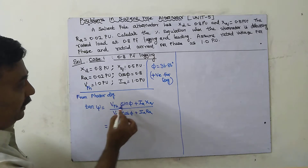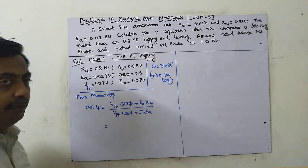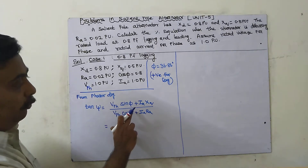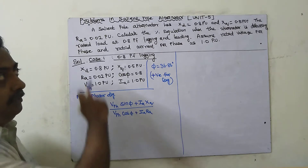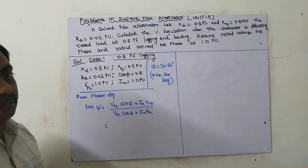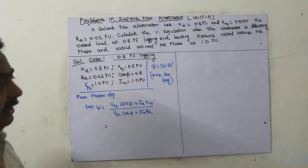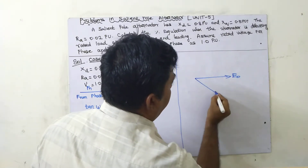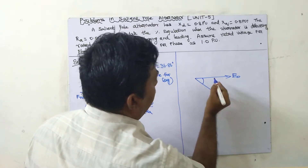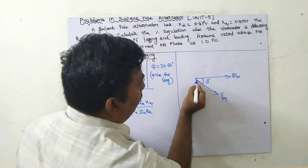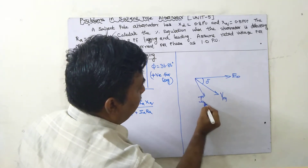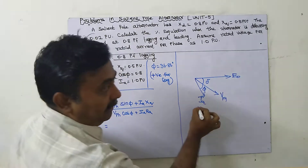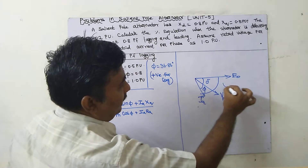From the phasor diagram, the formula is: tan ψ = (V_phase·sin φ + Ia·xq) / (V_phase·cos φ + Ia·ra). Here φ is the angle between voltage and current, δ is the load angle (angle between no-load voltage E and rated terminal voltage V), and ψ is the angle between E and Ia.